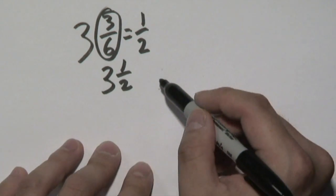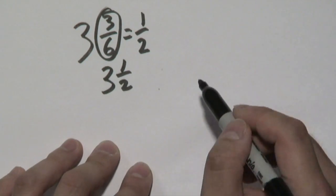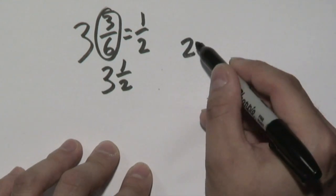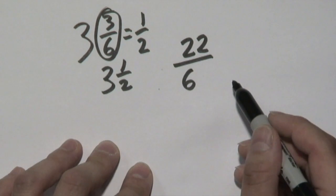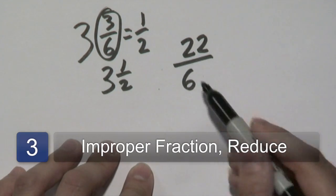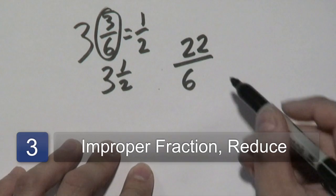Now, if you have an improper fraction given to you, let's just say twenty-two over six, what you can do first is reduce this to lowest terms, and then write it as a mixed number if necessary.